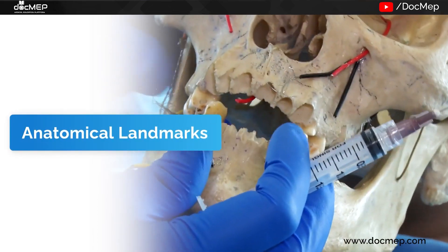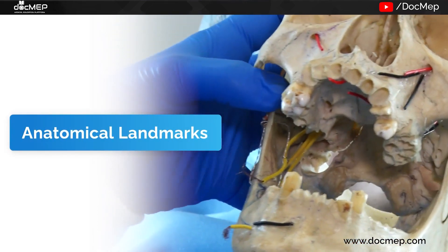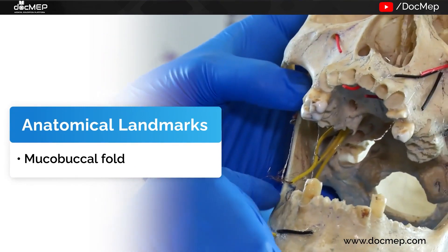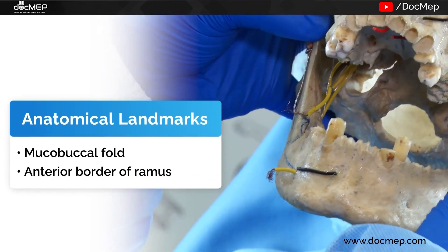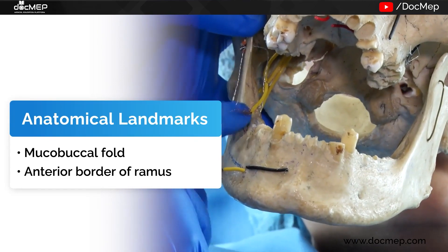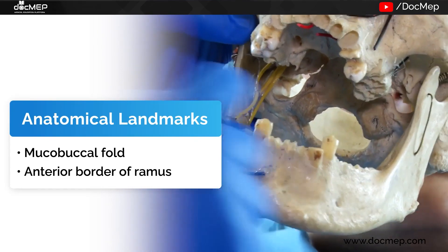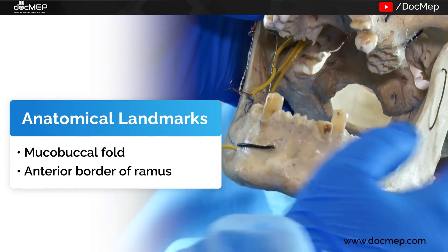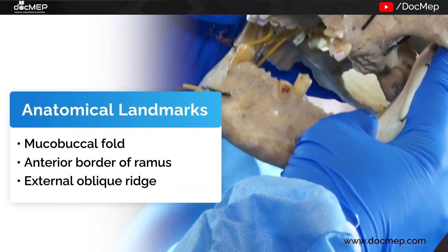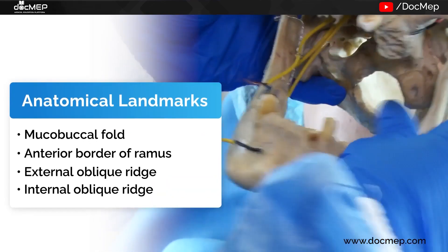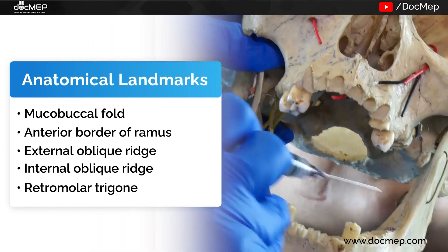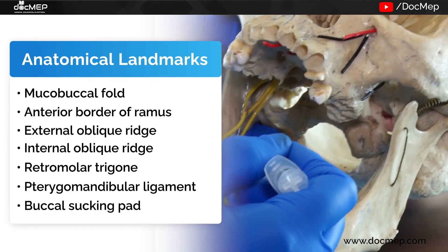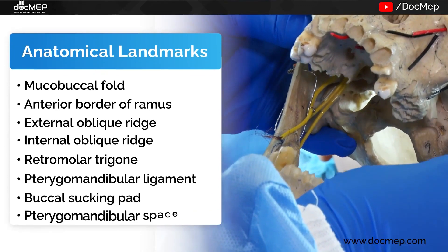The anatomic landmarks for this block are the mucobuccal fold, the anterior border of the ramus of the mandible which runs down as the external oblique ridge — and the deepest point on this is called the coronoid notch — the internal oblique ridge, the retromolar trigon, the pterygomandibular ligament, the buccal sucking pad, and the pterygomandibular space.